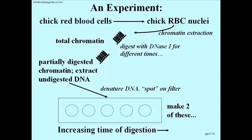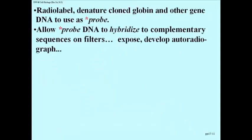On the far right would be the DNA taken from the most digested chromatin; on the far left, DNA from the least digested chromatin. Make a duplicate, so you have two of these filters — you'll see why in just a moment. We're going to ask whether we can detect a gene for globin, the protein that is part of hemoglobin, whether we can detect the globin gene in the chromatin digest from a red blood cell.